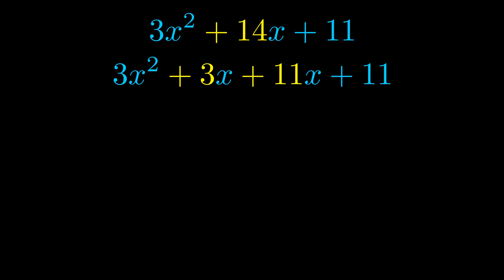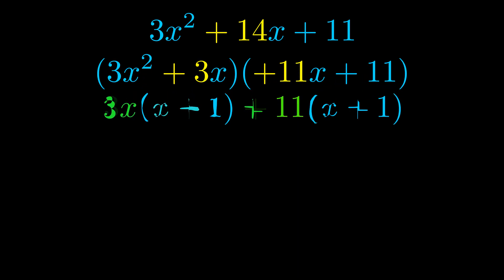Once we've done this we go ahead and we put parentheses around the first term and the last term. And we do that so that we can take the greatest common factor out of both terms. We can see the greatest common factor is now outside in green.